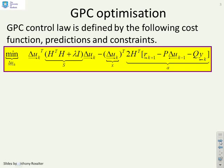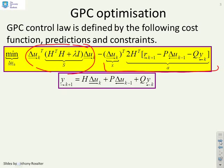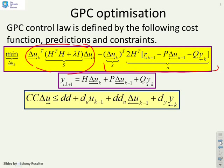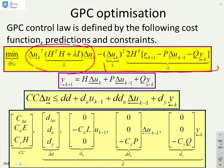Just a reminder then of what happened with GPC. You had a quadratic performance index, there's your quadratic part and there's your linear part. You had prediction equations of this form with an H, P, and Q. And you had constraints of this particular form here where you had specific definitions for the matrices in this constraint equation. So what we want to look at is how does this change if we use an independent model form.